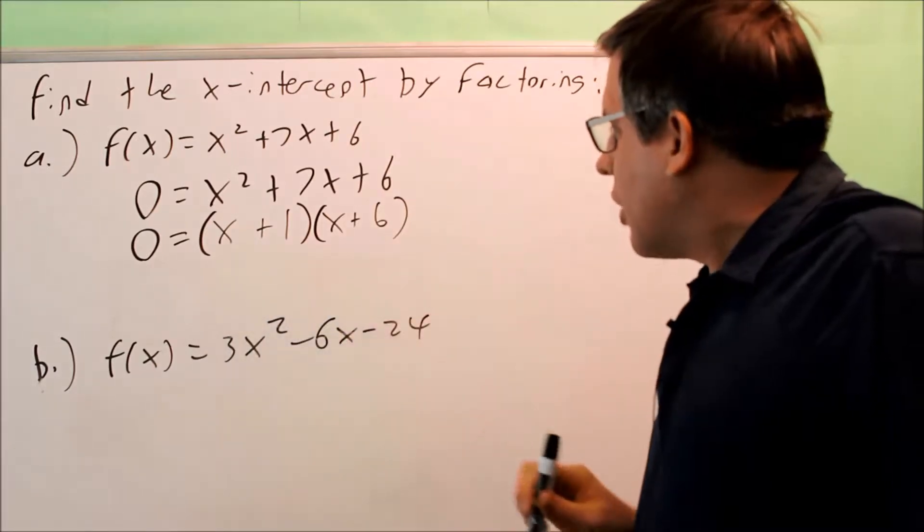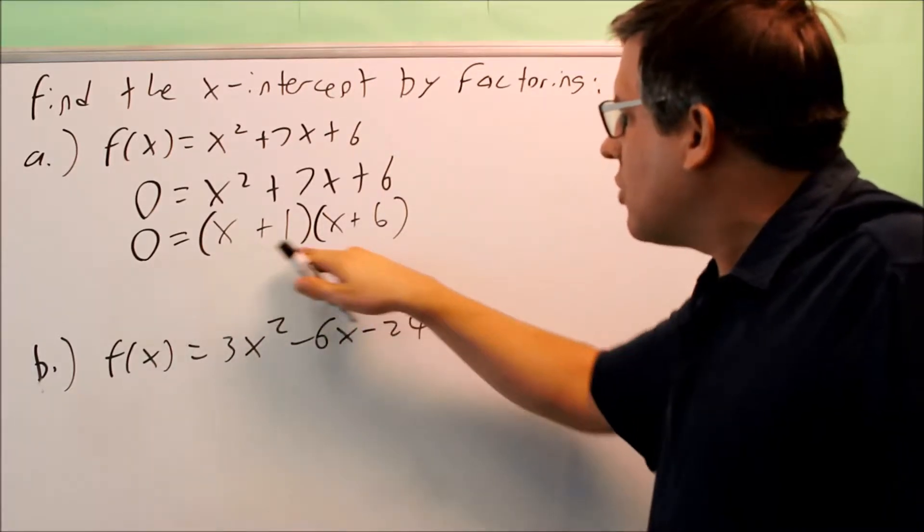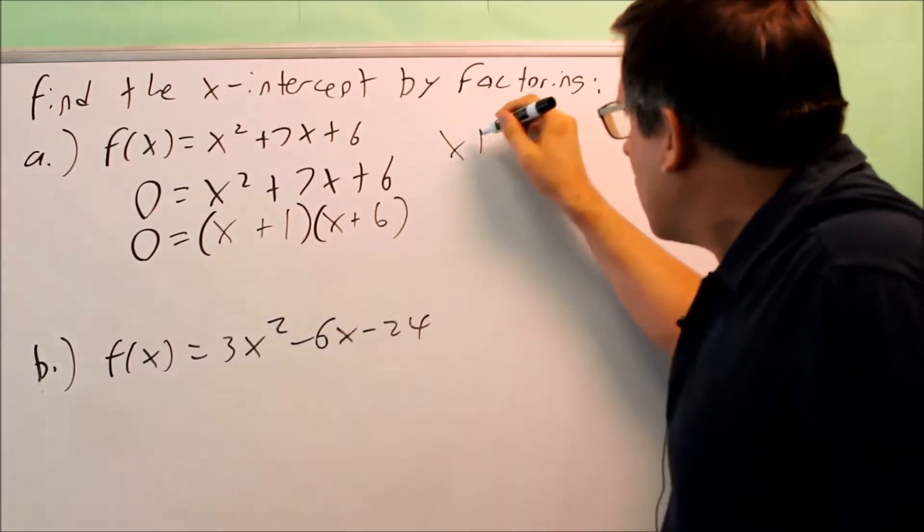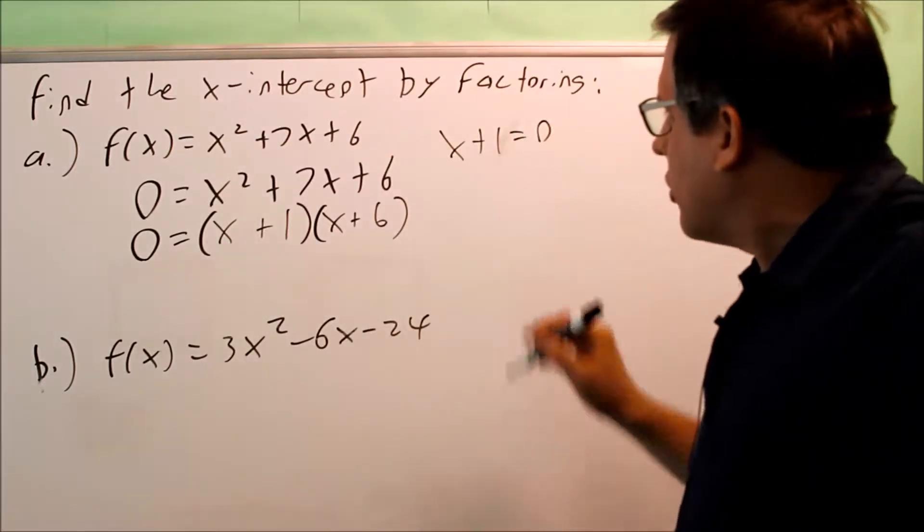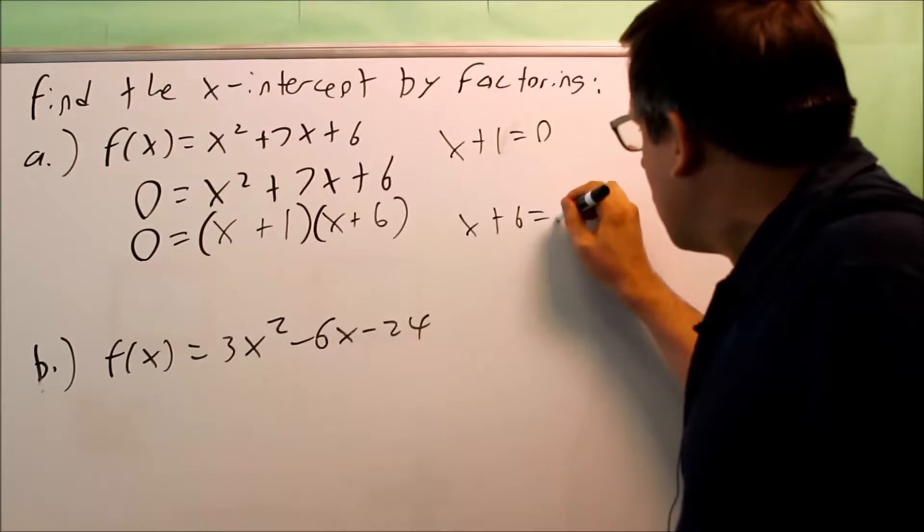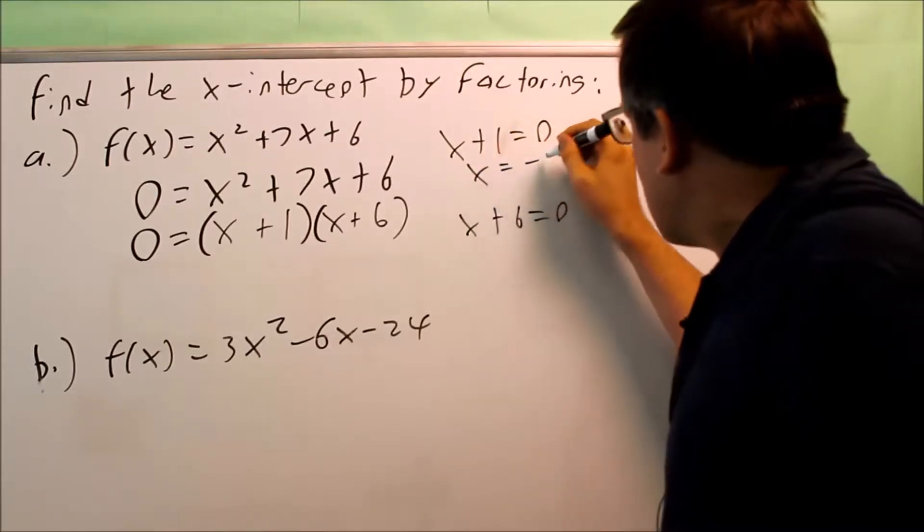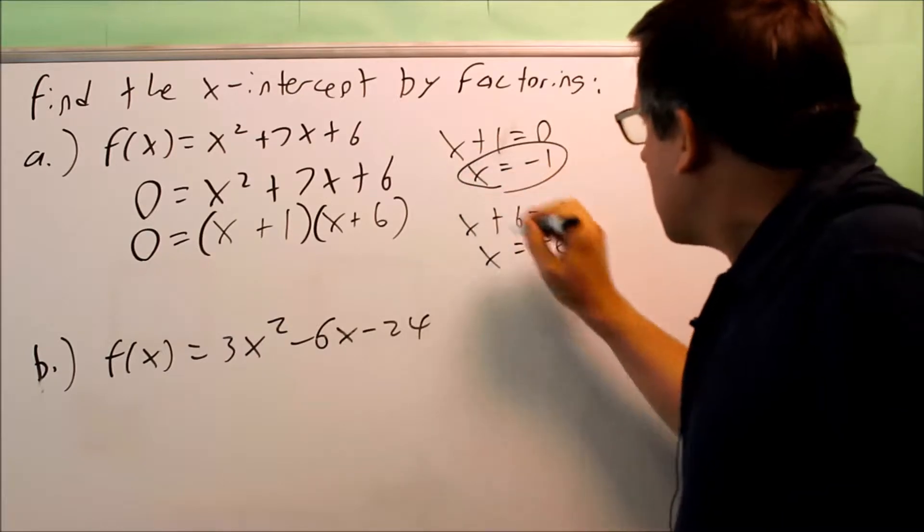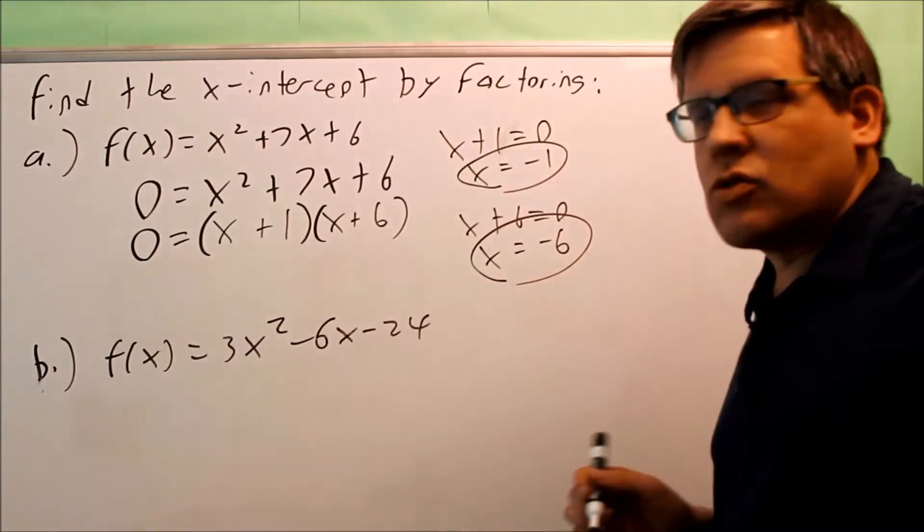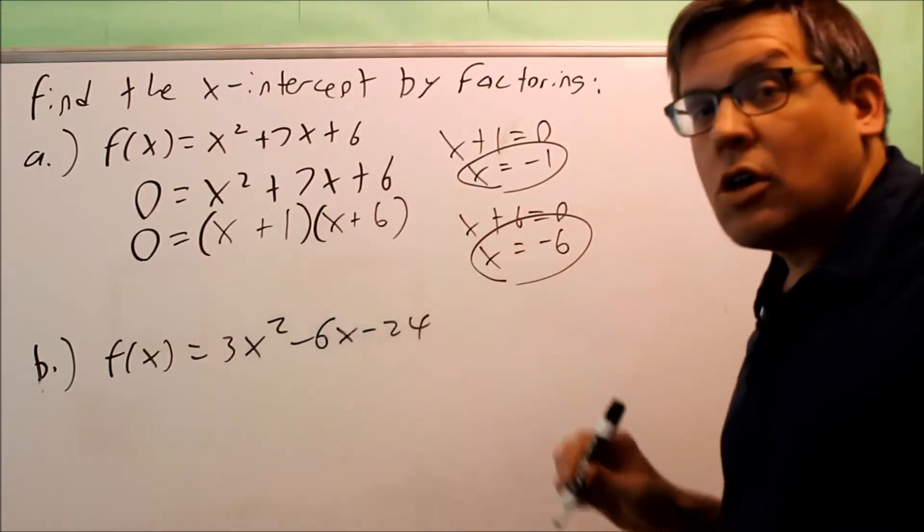Now that you have it factored correctly, what you need to do is you're going to take each individual factor and you're going to set each one equal to 0 individually. So x plus 1 equals 0 and x plus 6 equals 0. And you get x is equal to negative 1 and x is equal to negative 6. So that would be your two answers. Those are the two x-intercepts for part a.